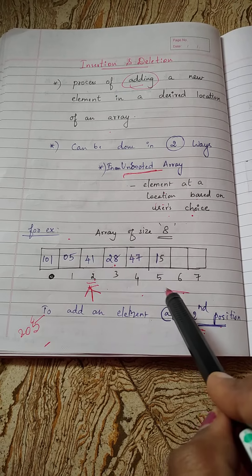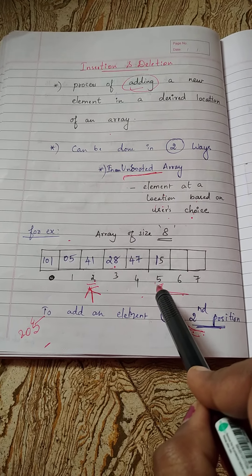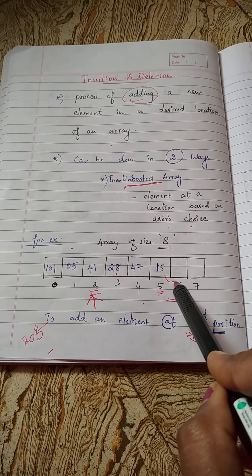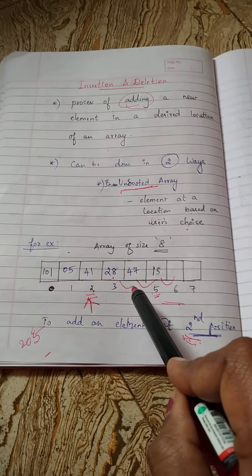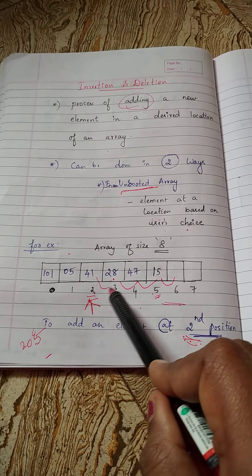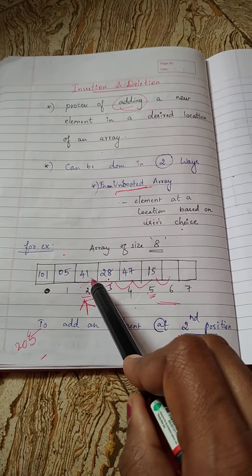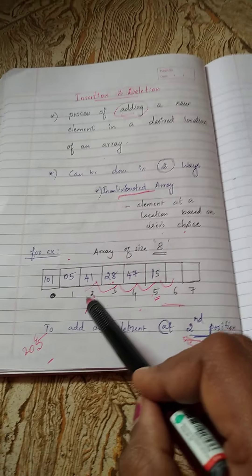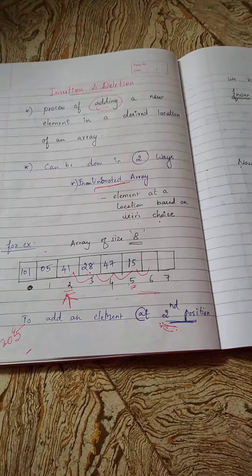So you have to start the position from the last element in the array. Here fifth position is the last element, so you have to shift fifth position to sixth, fourth position to fifth, third position to fourth, second position to third. Now automatically this place will be emptied and you can now add 205 here. So this is the procedure for inserting an element in an unsorted array.